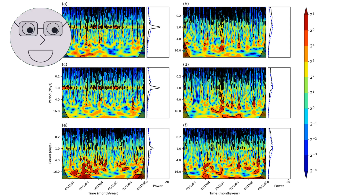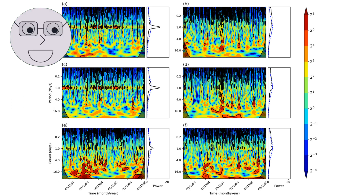One of the key advantages of wavelets is their ability to provide both time and frequency information simultaneously. This is particularly useful in applications such as audio and image processing, where it is important to analyze both the time and frequency characteristics of a signal.